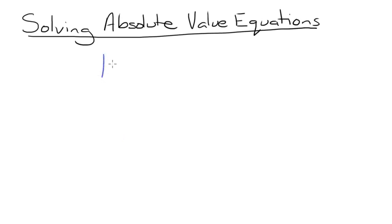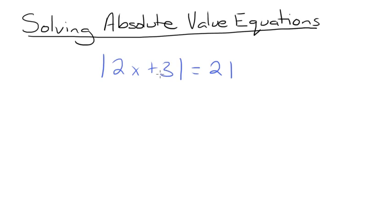Let's try another one. The absolute value of 2x plus 3 is equal to 21. This time we have an expression inside our absolute value bars, but the absolute value expression is already isolated, so we don't need to isolate it. We're going to start by getting rid of the absolute value bars. We split our expression inside into two different equations — we want to consider the expression to be a positive answer and a negative answer. The expression inside the absolute value bars is set equal to both the positive and negative of the answer.